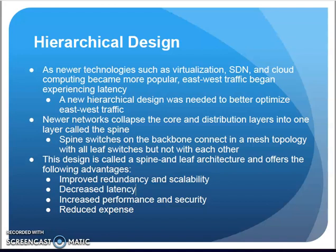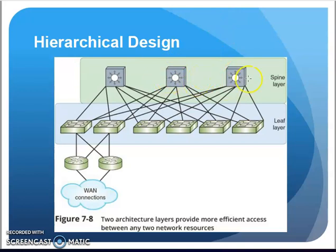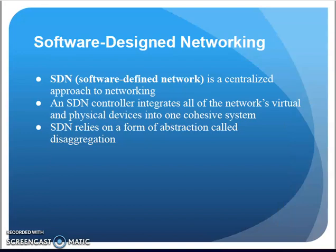In the spine and leaf topology, the core and distribution layers get collapsed together. The leaf switches might serve one floor or part of a building, while the spine handles traffic moving between them. So the core and distribution layers are squished together to form the spine layer. Keep these in mind as network design models: three-tier hierarchical and spine-and-leaf.